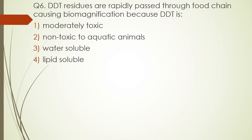Question number six. DDT residues are rapidly passed through the food chain causing biomagnification because DDT is: moderately toxic, non-toxic to aquatic animals, water-soluble, or lipid-soluble? The correct answer is option four — DDT is lipid-soluble.